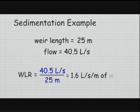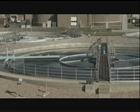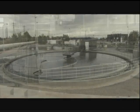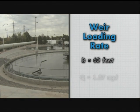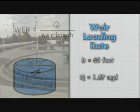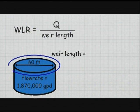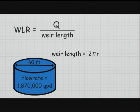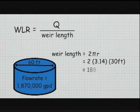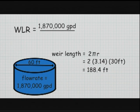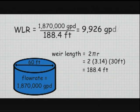That gives 1.6 liters per second per meter of weir. Now consider a circular clarifier that has a continuous weir around the perimeter or outside edge. The tank diameter is 60 feet with a flow of 1.87 million gallons per day, so let's determine the weir loading rate. We find the length of the weir by calculating the circumference: 2 times pi times the radius. 2 times 3.14 times 30 feet is 188.4 feet of weir. 1.87 million gallons per day divided by 188.4 feet of weir results in 9,926 gallons per day per foot of weir.